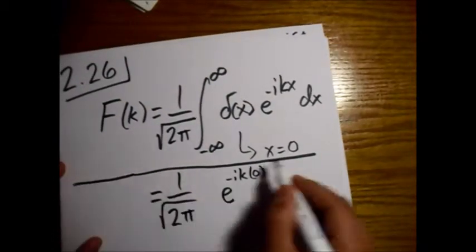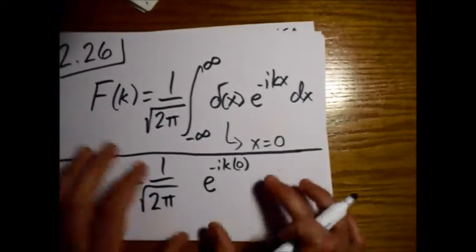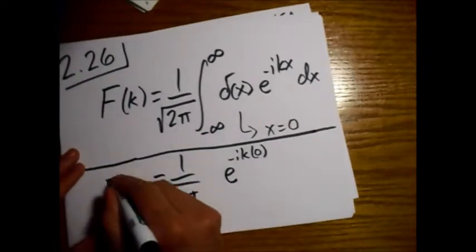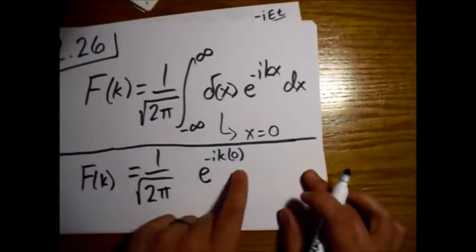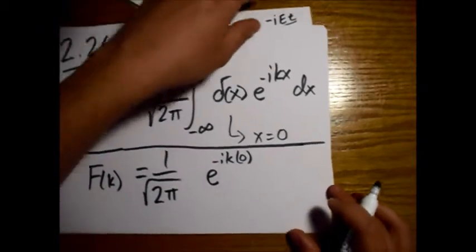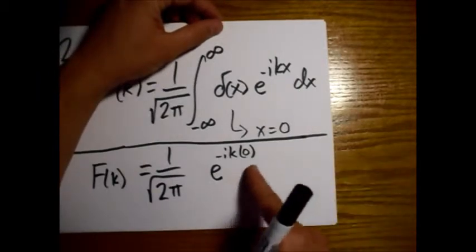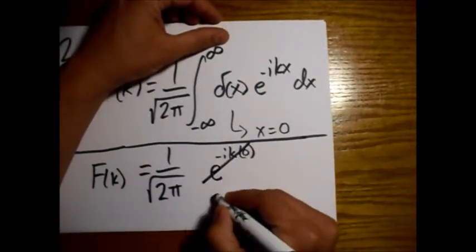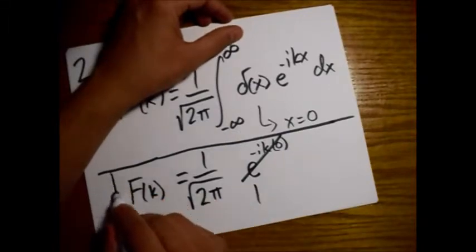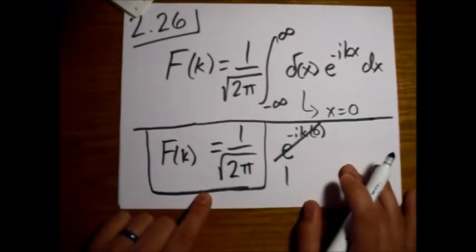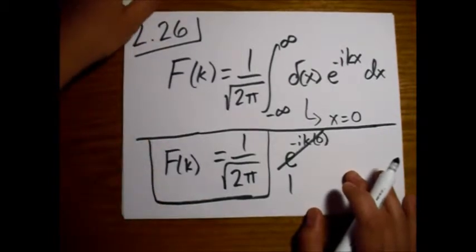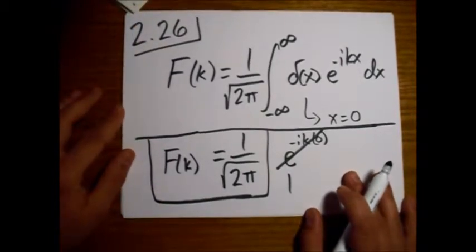I'm going to separate this off so it's clear what this is. Alright, and what is an exponential raised to 0? It's equal to 1. So this piece here goes to 1. And we are left with the Fourier transform of the Dirac delta function is 1 over the square root of 2 pi.